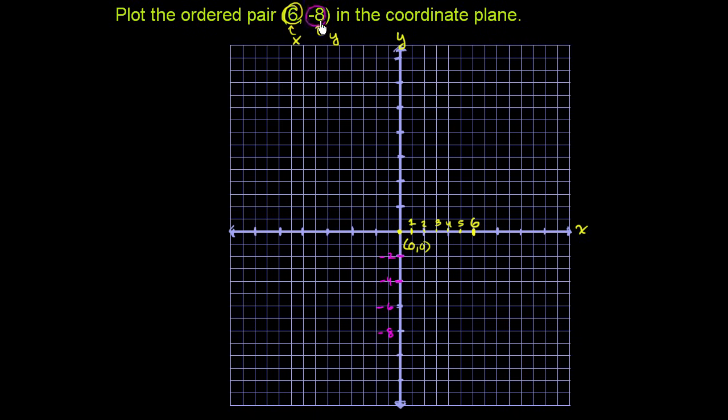And then we move down 8. We move to the right 6, and then we move down 1, 2, 3, 4, 5, 6, 7, and 8. And we are right over there. So that is the point (6, -8).